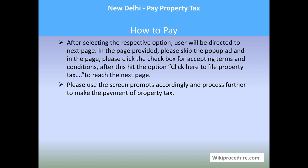Select the appropriate tab to reach the payment gateway page and make the payment as per the option you have selected. Once you complete the online payment, you will get a transaction slip. Please save it for future reference as proof that you have made the property tax payment online. We hope this video helped you — don't forget to give us a like and subscribe to our channel. Thank you for visiting WikiProcedure.com to learn how to pay property tax online in New Delhi.